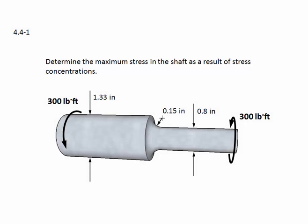Problem 4.4-1. The problem statement reads: determine the maximum stress in the shaft as a result of stress concentrations. Here's the shaft. We see it has a change in cross-section. There's a fillet here with a radius also shown and an applied torque. Let's do this problem.